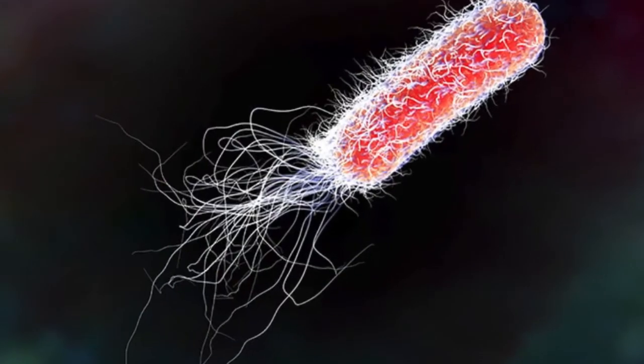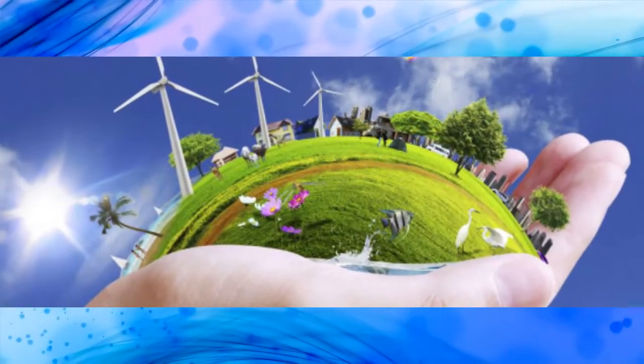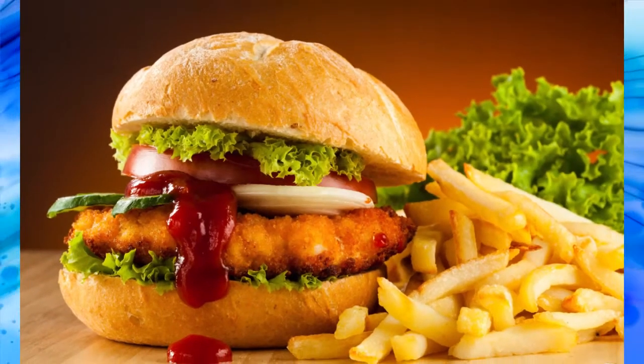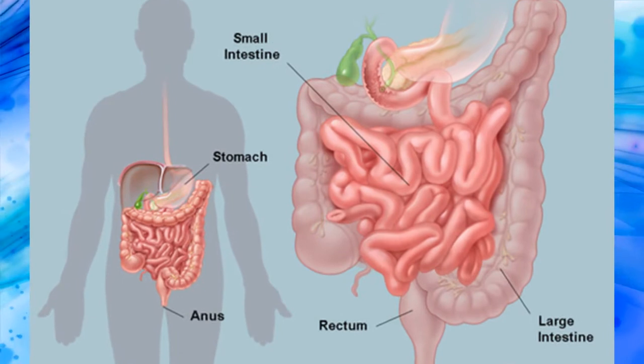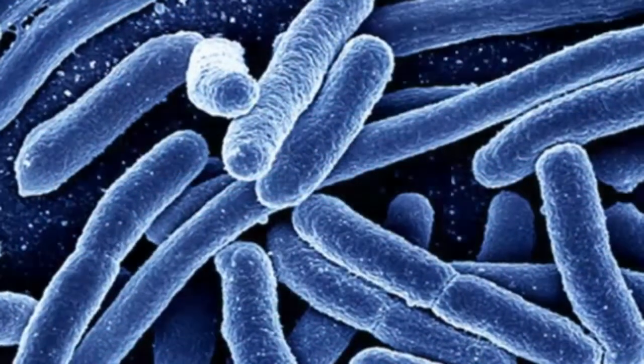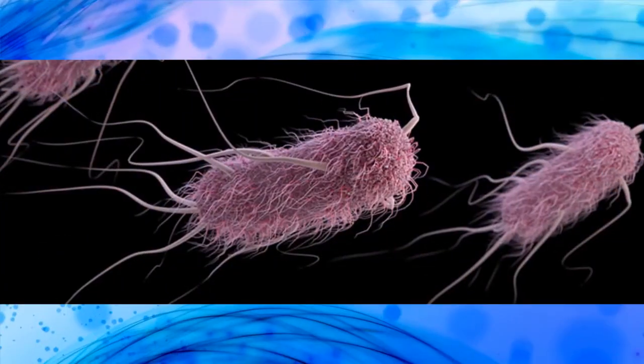Escherichia coli are bacteria found in the environment, foods, and intestines of people and animals. Escherichia coli are a large and diverse group of bacteria.